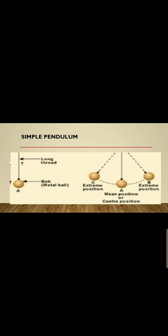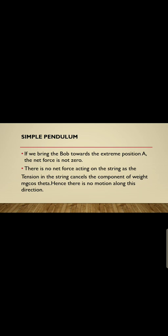The bob is attached to the string and two forces are acting on it: the upward force known as tension, and the downward force known as the weight of the bob. These two forces cancel each other's effect, so we resolve the weight into two components. The bob is at the center, which is the mean position, with extreme positions B and C. The length of the simple pendulum is denoted by L. If we bring the bob towards extreme position A, the net force is not zero.